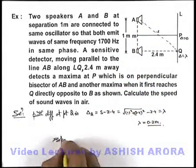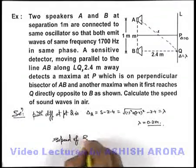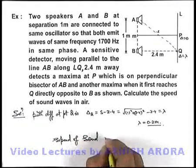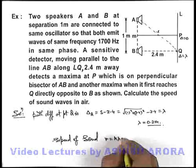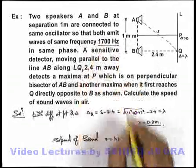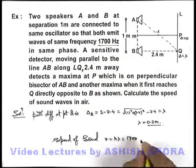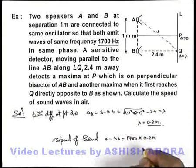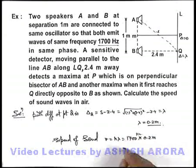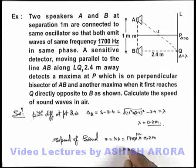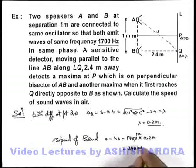We can directly write speed of sound as v equals n lambda where frequency is already given to us, 1700 hertz multiplied by 0.2 meter. So this will be 340 meters per second. That will be the answer to this problem.